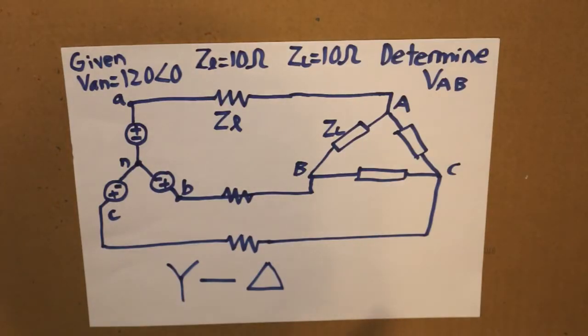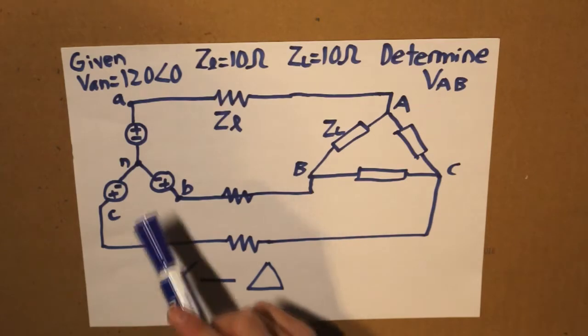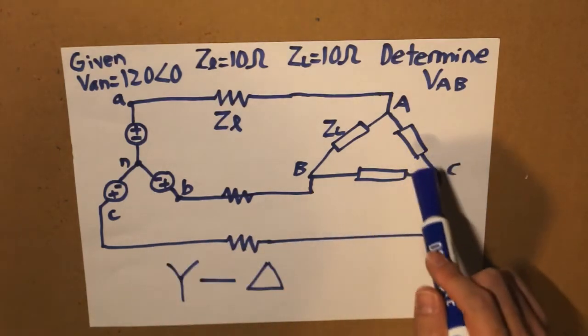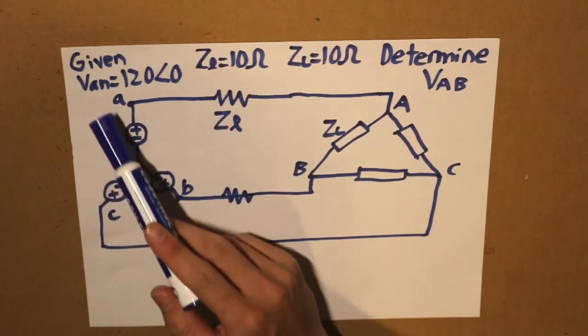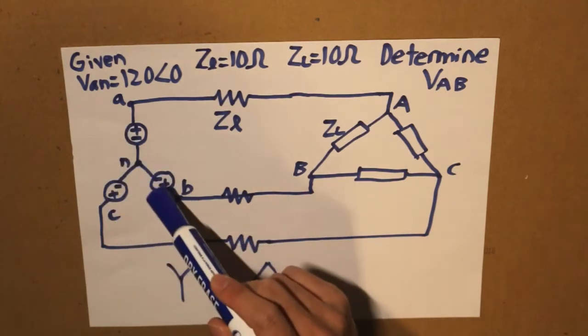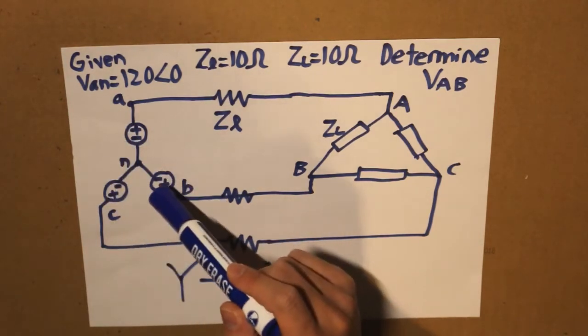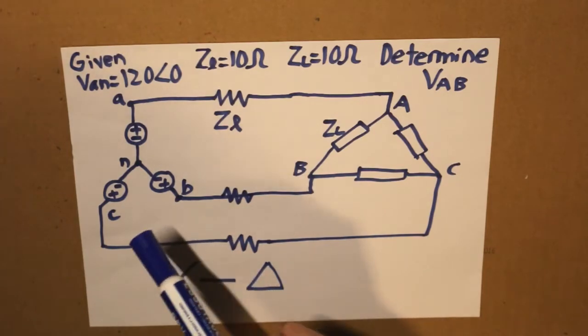Hello everybody, in this video we are going to do an example of a three-phase balanced voltage system where we have a Y connection and a delta connection connected together and what we need to do is to find the delta voltage given our initial value of our voltage here which is in its Y connection.